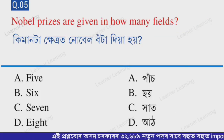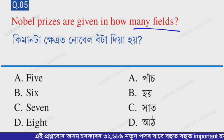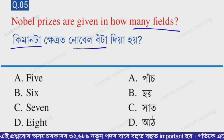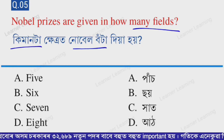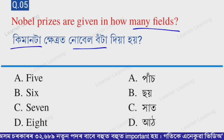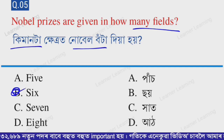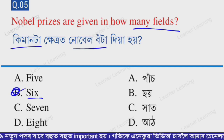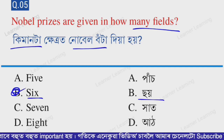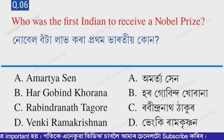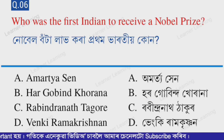Next question: Nobel Prizes are given in how many fields? The correct option is option B — 6. Nobel Prizes are given in 6 fields.